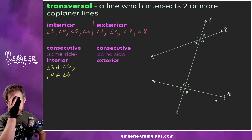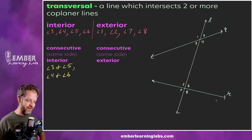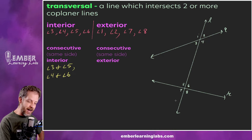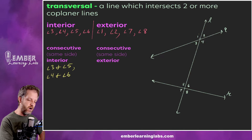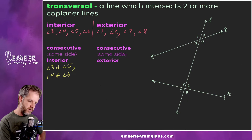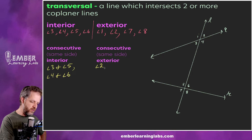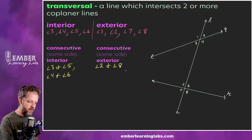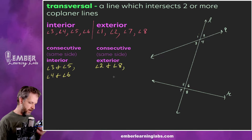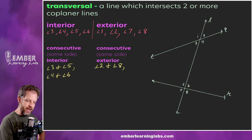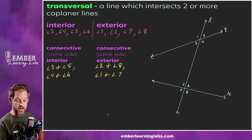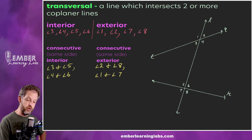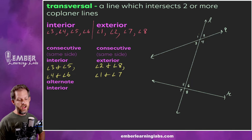Similarly, consecutive exterior — or same-side exterior — would be the pairs on the same side of the transversal but on the exterior of the two lines. So the pairs would be angle 1 and angle 7, and then angle 2 and angle 8.